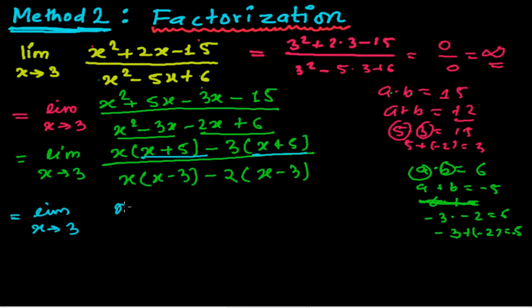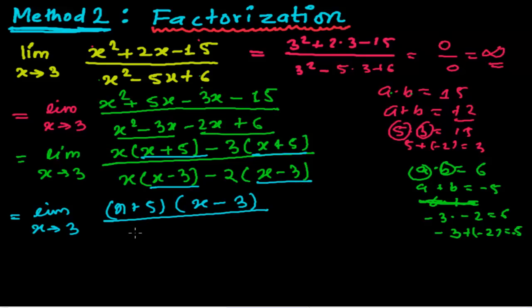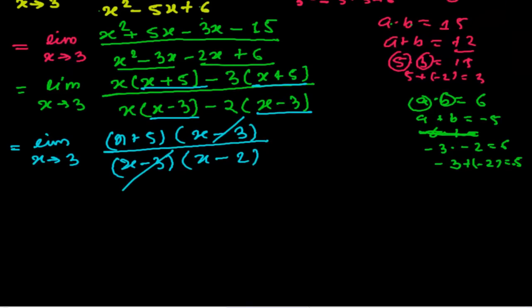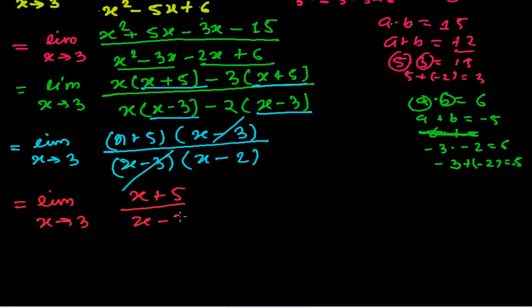Now both sides we're getting x plus 5 in the numerator, so taking x plus 5 common leaves us with (x minus 3). Similarly in the denominator x minus 3 is common. We can now cancel the (x minus 3) from the numerator and denominator.